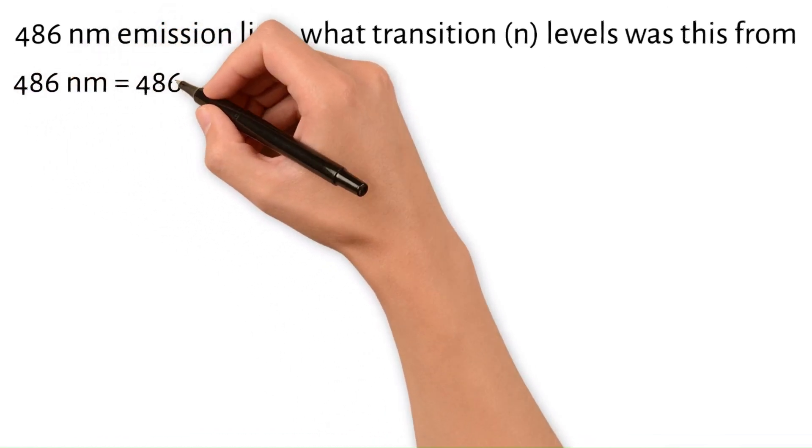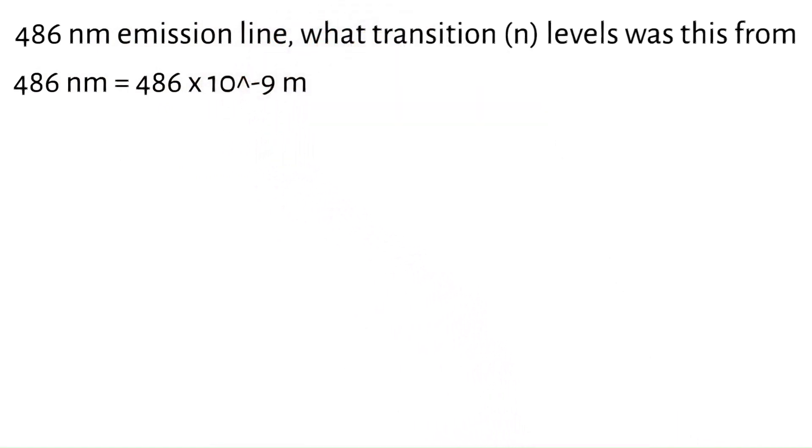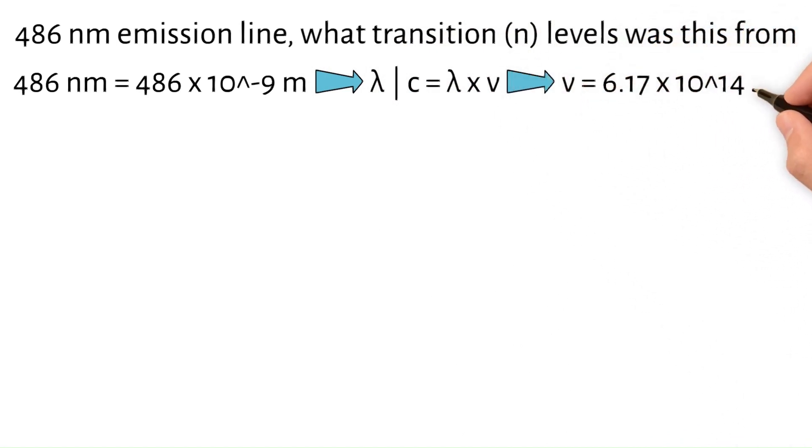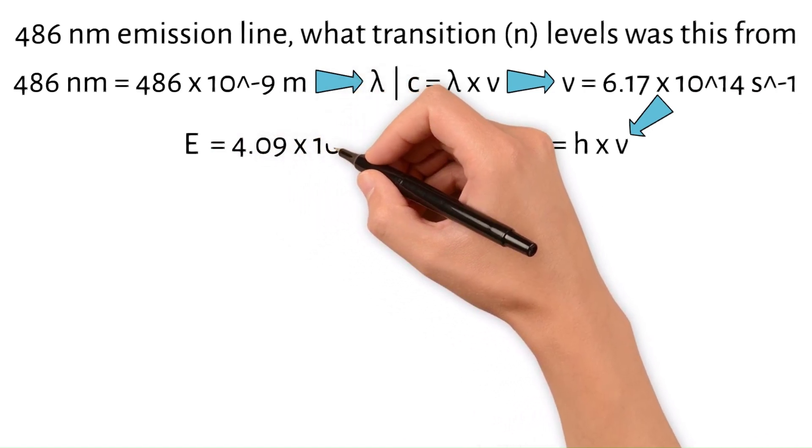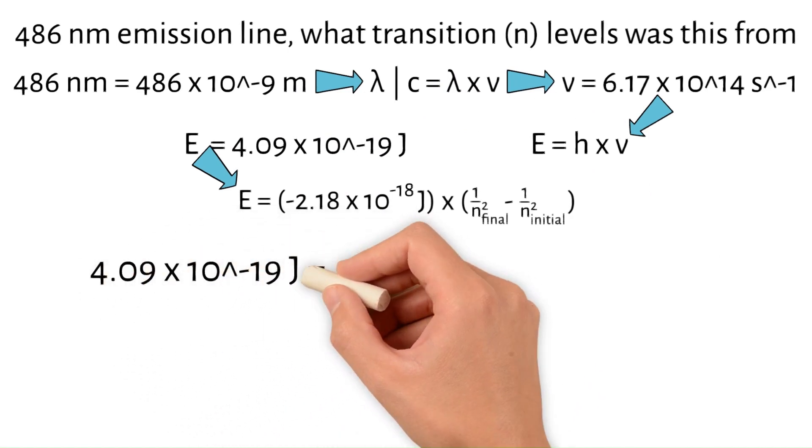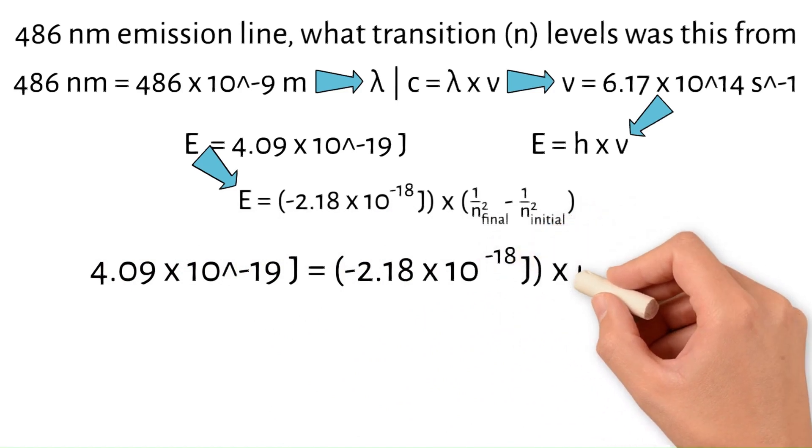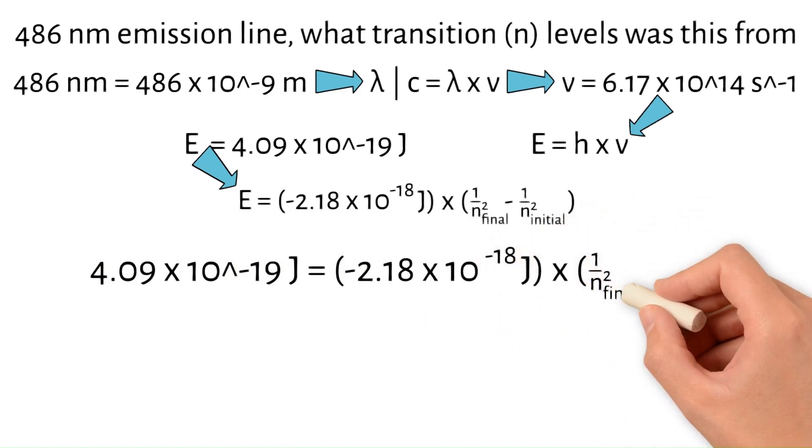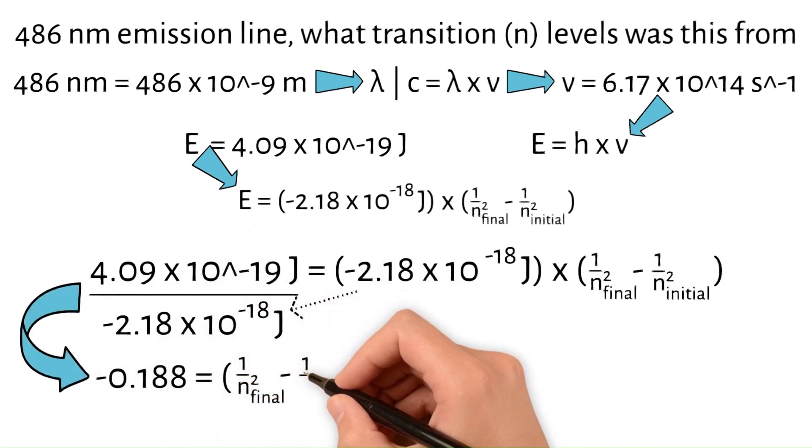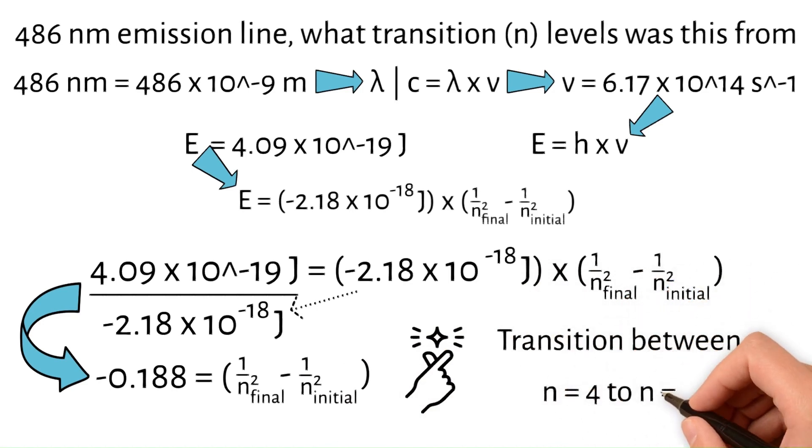Given 486 nanometers equals 486 times 10 to the negative 9 meters, you can plug that into lambda in c equals lambda nu and get the frequency nu, which is 6.17 times 10 to the 14th per second. Plugging that into E equals h nu, we get E equals 4.09 times 10 to the negative 19th joules. Plugging that into the Bohr model equation, we get E equals 4.09 times 10 to the negative 19th joules equals negative 2.18 times 10 to the negative 18th joules, times 1 divided by n squared final, minus 1 divided by n squared initial. Doing some algebra, we get negative 0.188 equals 1 divided by n squared final, minus 1 divided by n squared initial. And plugging in various integers, we find the transition between n equals 4 to n equals 2.